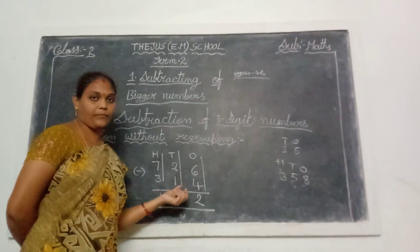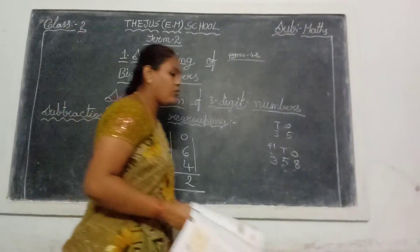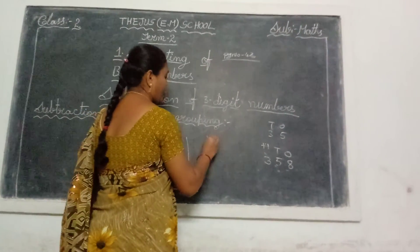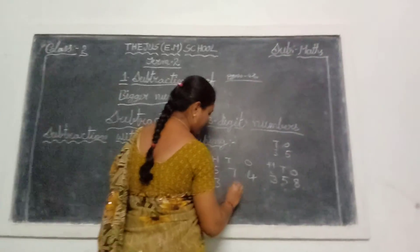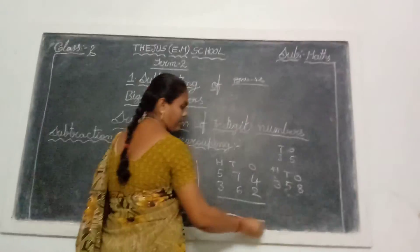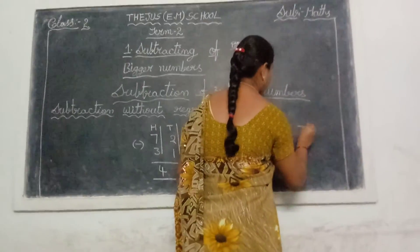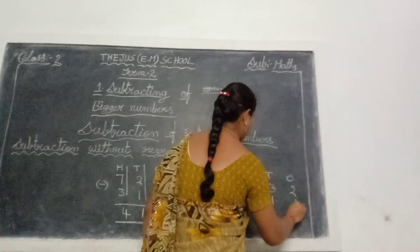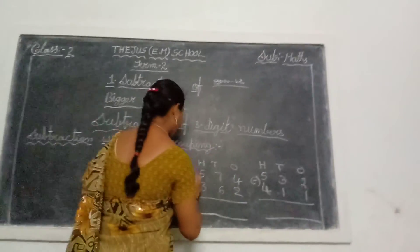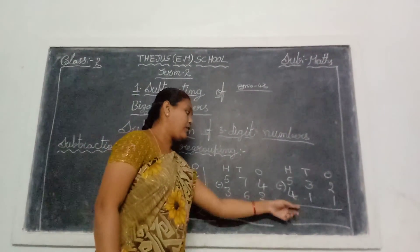This is the without-regrouping sum. Now you try two sums in your notebook. Do the subtraction. You try these two sums, children — not in your notebooks, these two sums only. You try that.